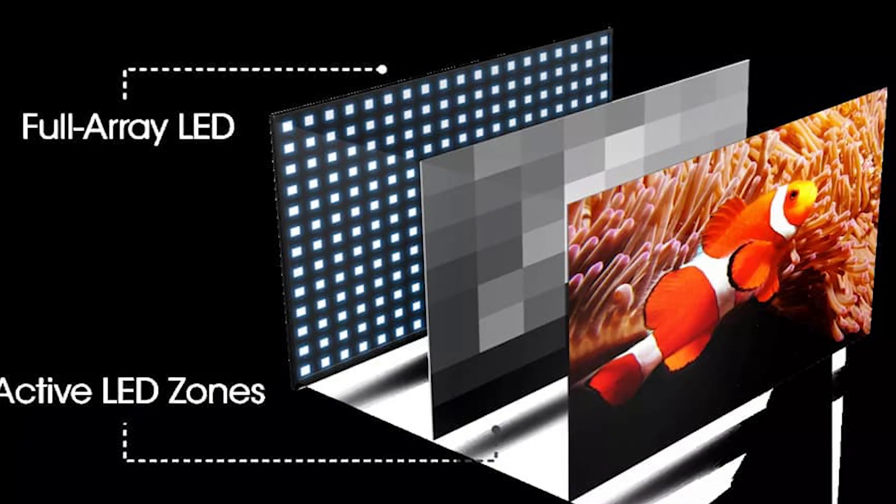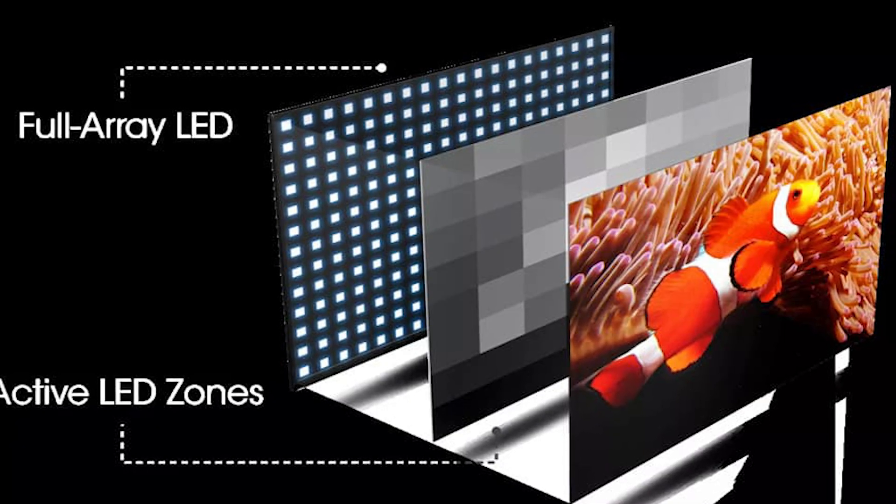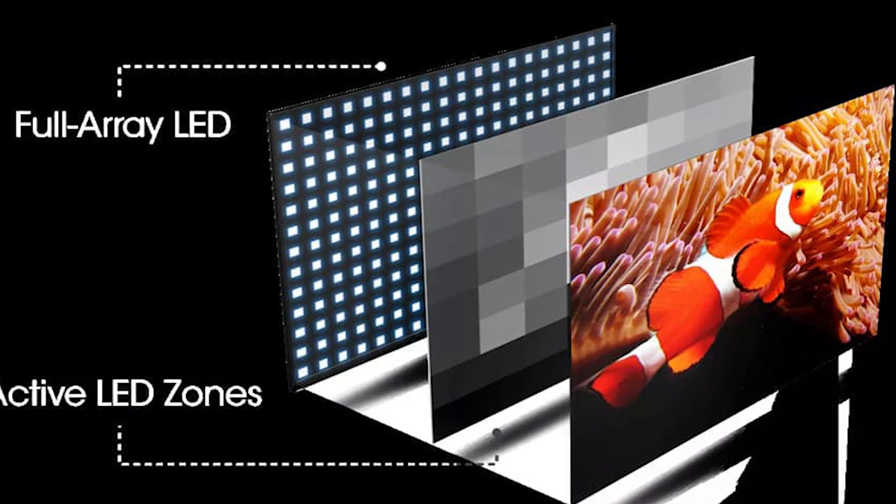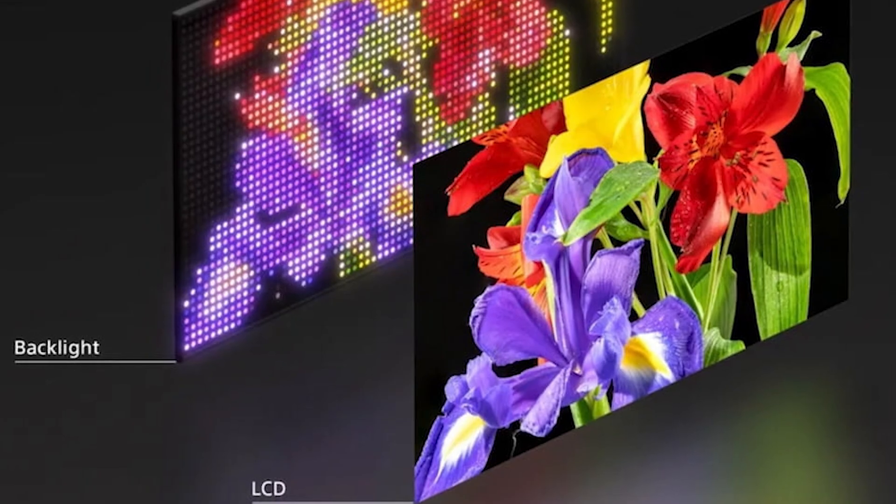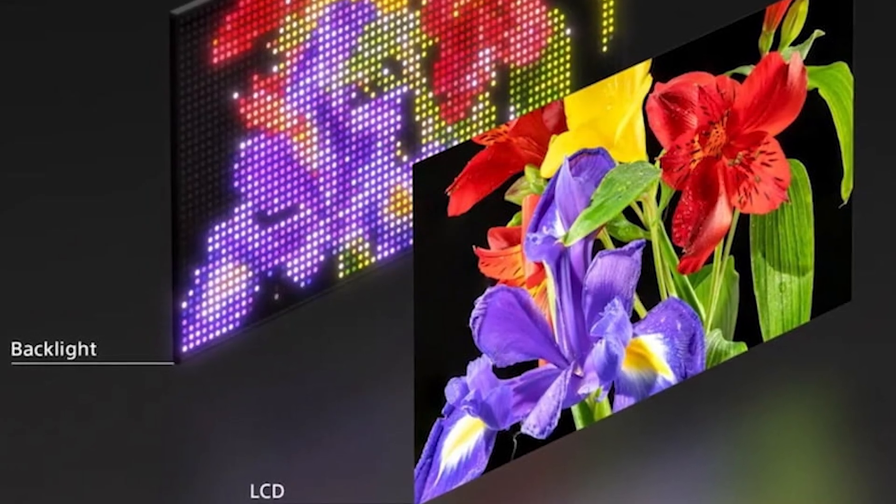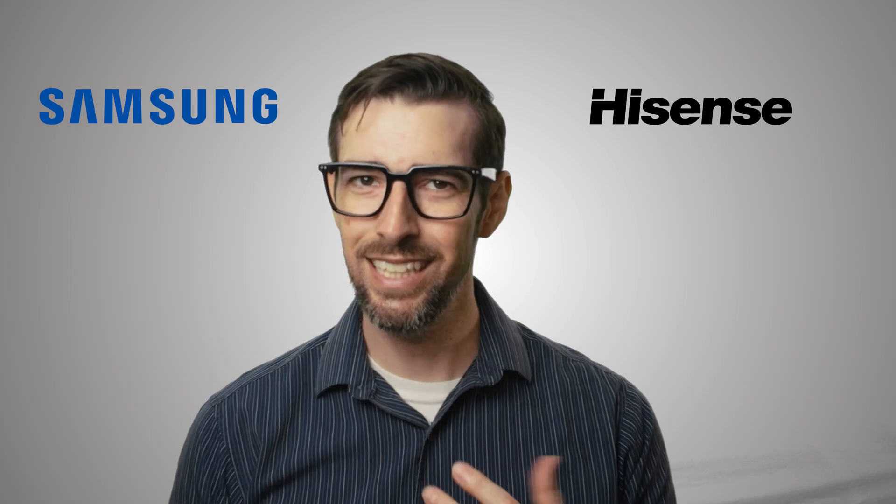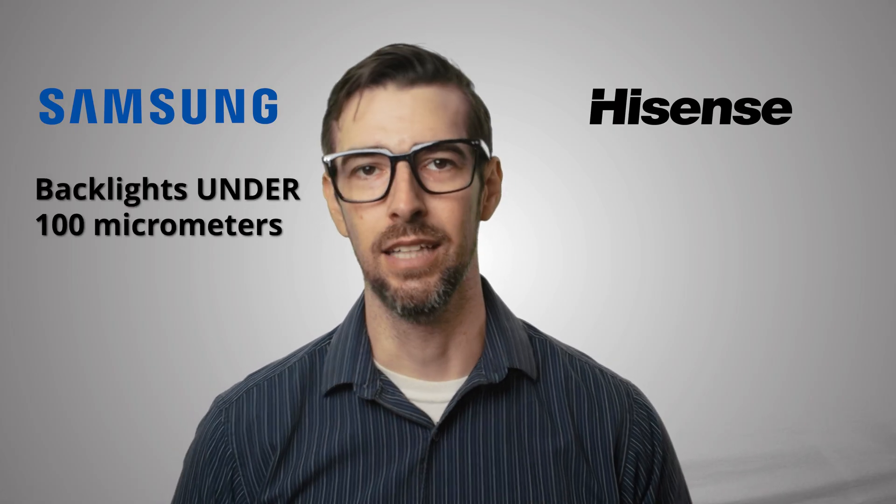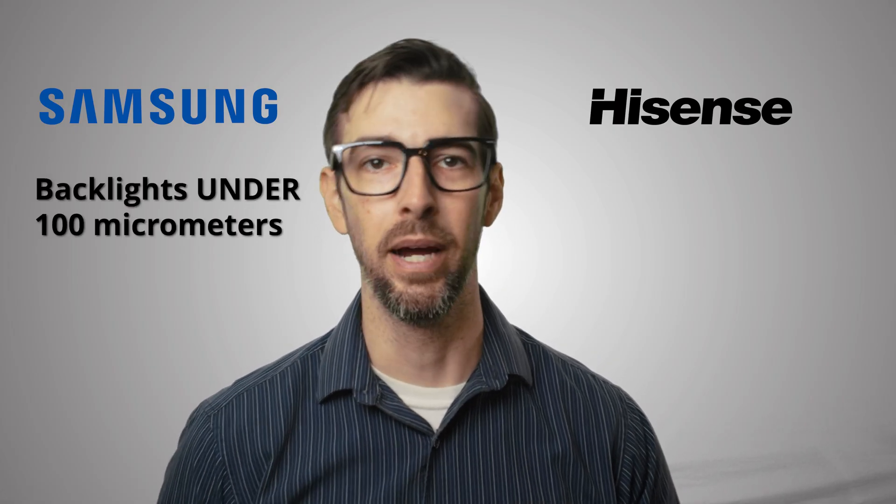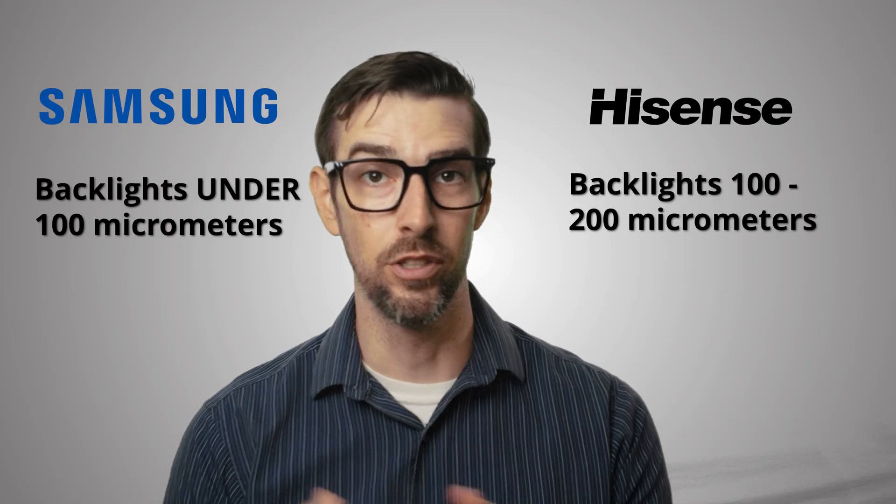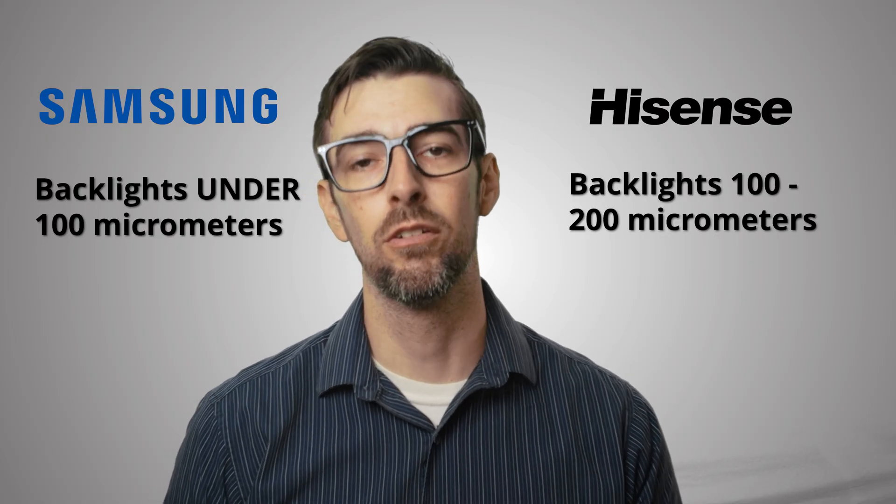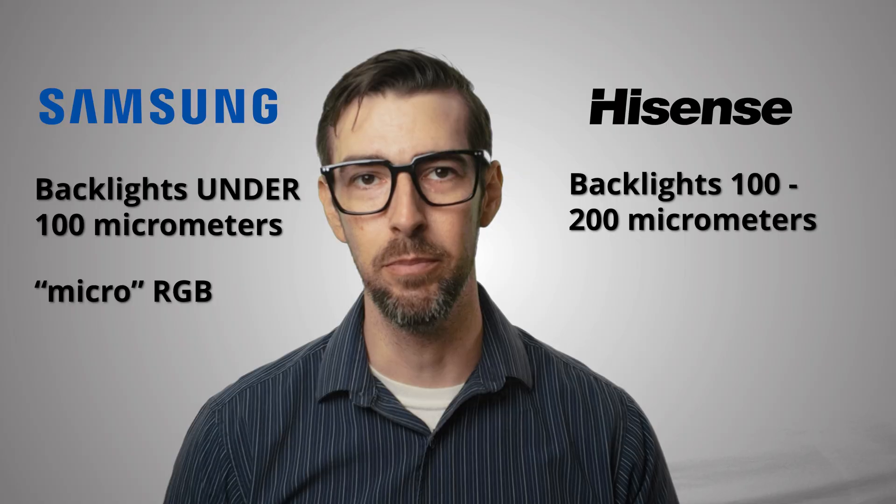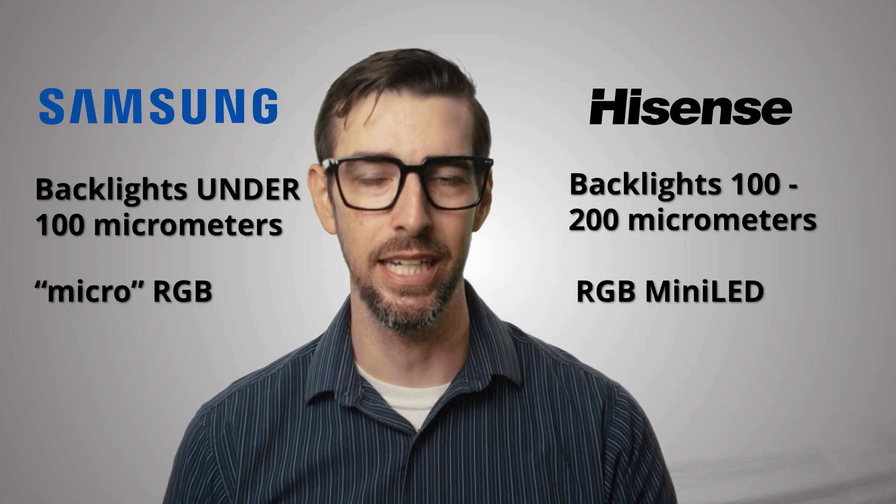The implementations are essentially the same, moving from white or blue backlights for the LCD panel to individual lighting elements for the three primary colors: red, green, and blue. But Samsung uses slightly smaller individual backlights that measure under 100 micrometers as opposed to 100 to 200 micrometers, so they're referring to their system as micro RGB as opposed to RGB mini LED. You with me here? But really this is more marketing speak than a radical difference in technology.